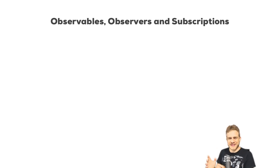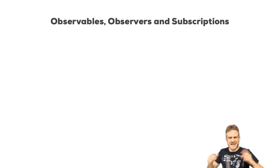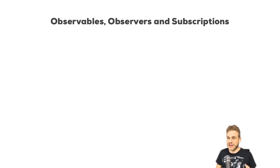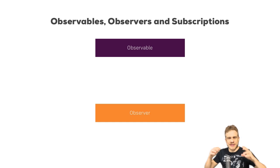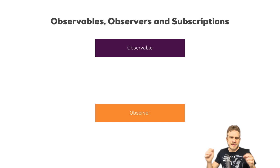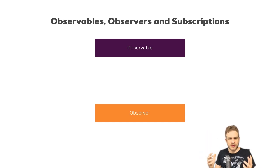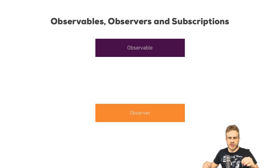Welcome to this video on RxJS, specifically on observables, observers, and subscriptions. What are all these things and how do they work together? We have our observable, which is basically a wrapper around some data source. Data source typically means a stream of values, because observables are a concept we typically use for asynchronous data, though it's not limited to this — you can also wrap it around any synchronous data source.